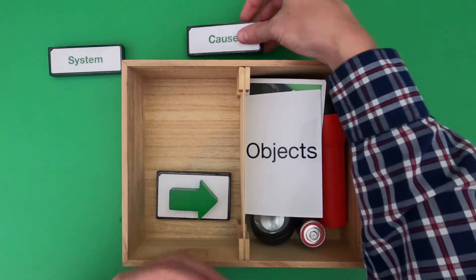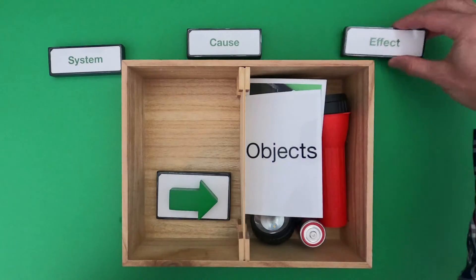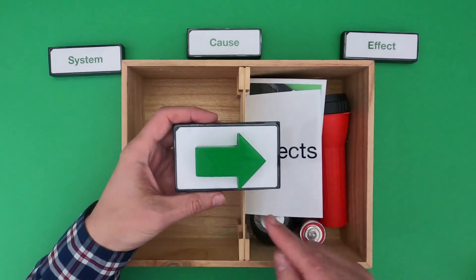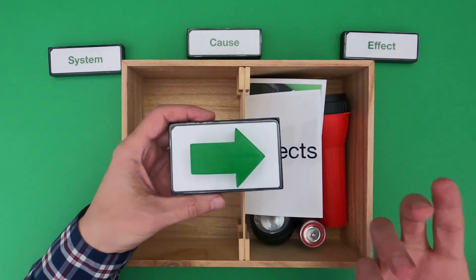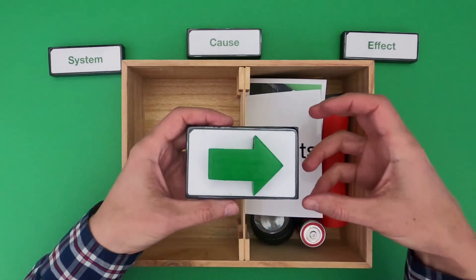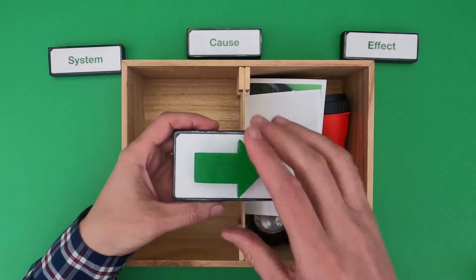We learned in the last video that cause will always lead to effect. So the object that represents cause and effect is a green arrow, because in science we're identifying what's the effect and then how do we work backwards to figure out the cause.